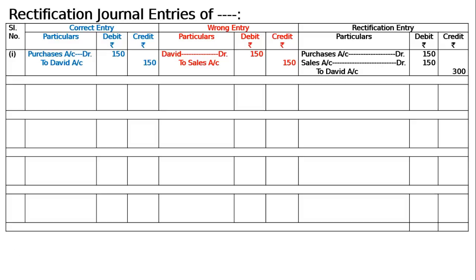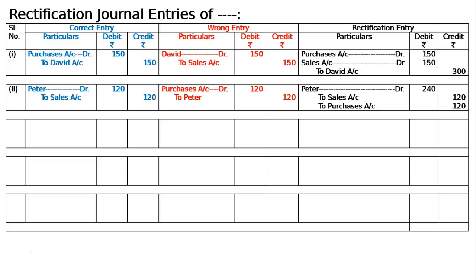Case (b): a credit sale of goods of Rs. 120 to Peter has been wrongly passed through the purchases book. The correct entry is Peter debited to sales, 120 and 120. But by mistake it was passed through the purchases book, so the wrong entry is Purchases account debited to Peter account, 120 and 120. The rectifying entry: Peter debited to sales, 120 and 120.